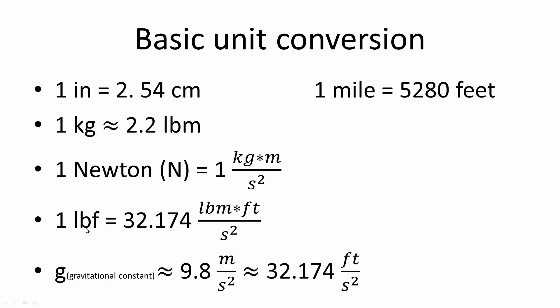Next, 1 pound force is equal to 32.174 pound mass times feet divided by seconds squared. And typically when we solve problems, we have to deal with gravity. For Earth, it's going to be 9.8 meters divided by seconds squared, which is equivalent to 32.174 feet divided by seconds squared.